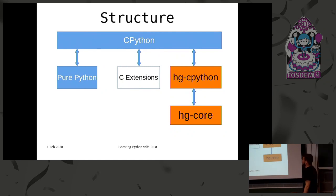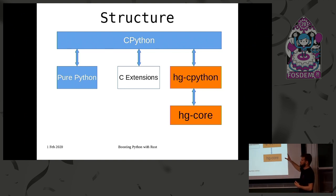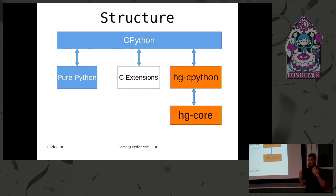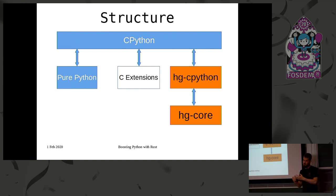That gives the following structure. Pure Python code talks to its back end. The C extensions also talk to CPython. From the Rust side, we have two separate crates. HgCore is a self-contained Mercurial library with no knowledge of Python whatsoever — the idea is to have it work entirely on its own. HgCPython is the bridge crate, the most developed of the possible crates, which bridges the Python code and the pure Rust code.